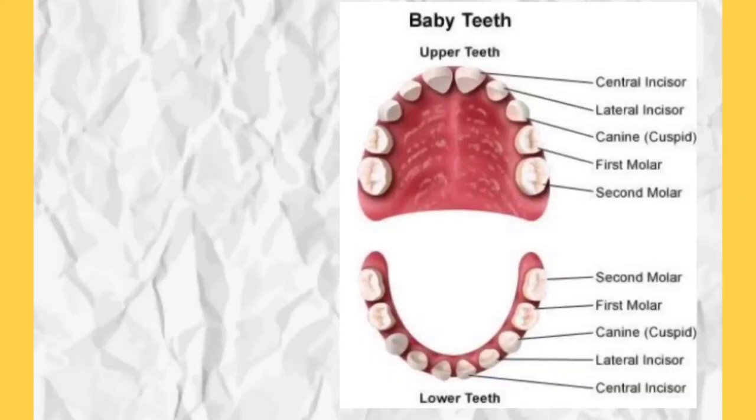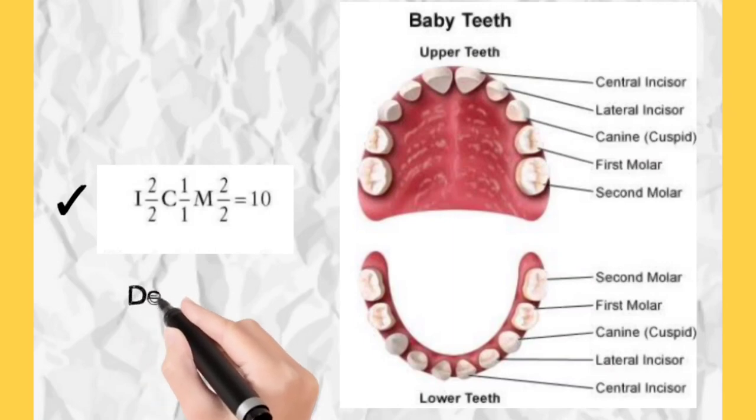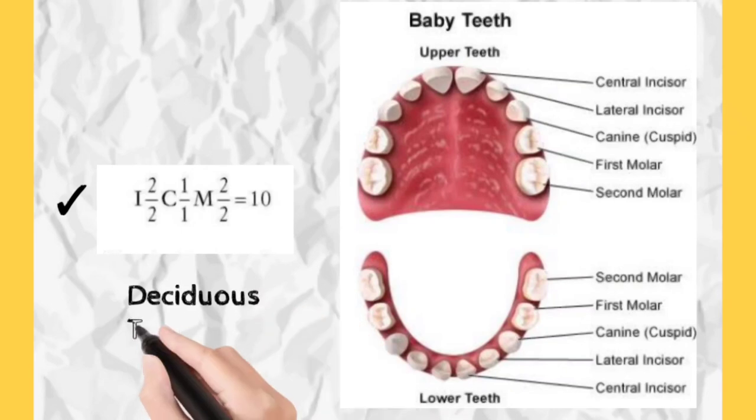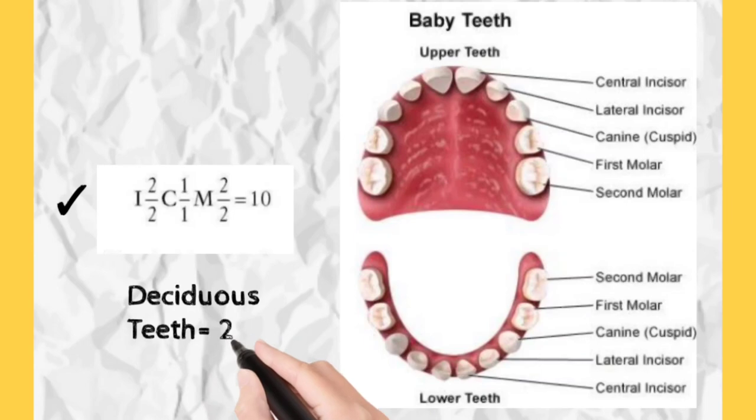Let us start with the dental formula of deciduous teeth or baby teeth or milk teeth, which are 20 in number - 10 in maxillary arch, 10 in mandibular arch. The dental formula for this is: 2 incisors maxillary, 2 incisors mandibular, 1 canine maxillary, 1 canine mandibular, 2 molars maxillary, 2 molars mandibular. In babies, premolars are absent.